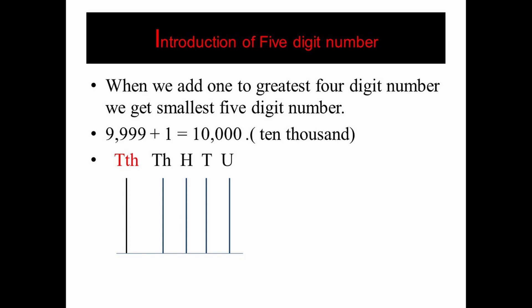Let us confirm there are five digits in ten thousand. Counting from the extreme right: units, tens, hundreds, thousands, and ten thousands — yes, there are five digits in ten thousand. The leftmost digit represents ten thousands.